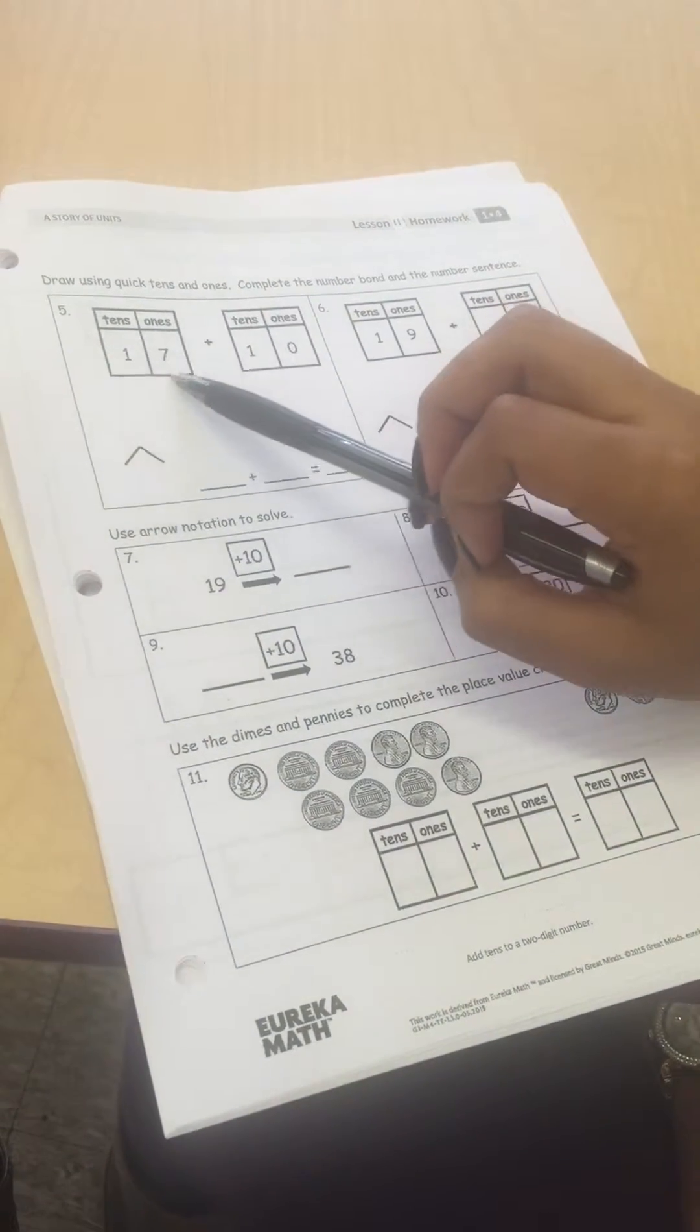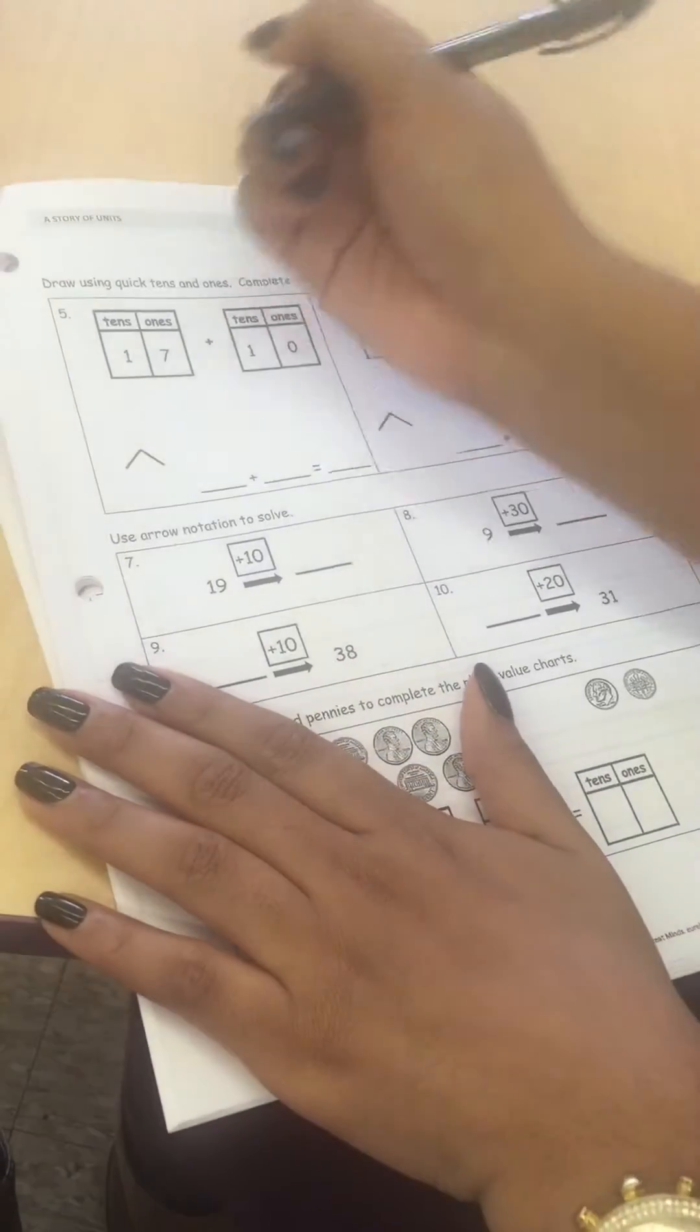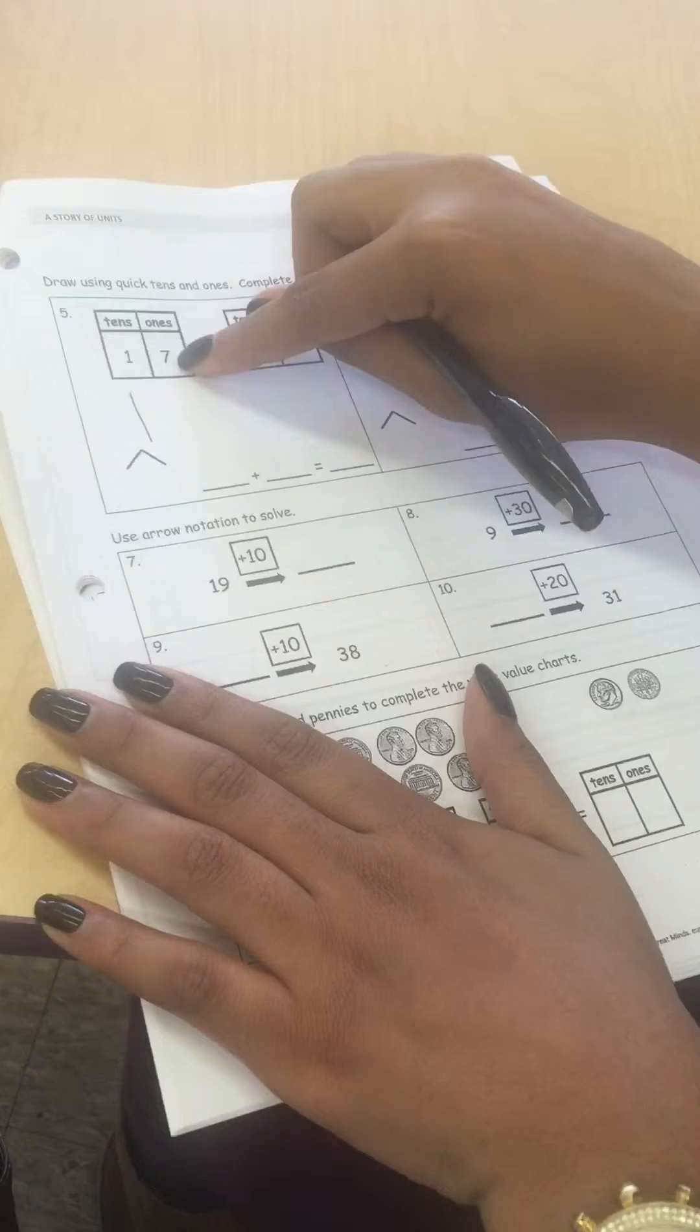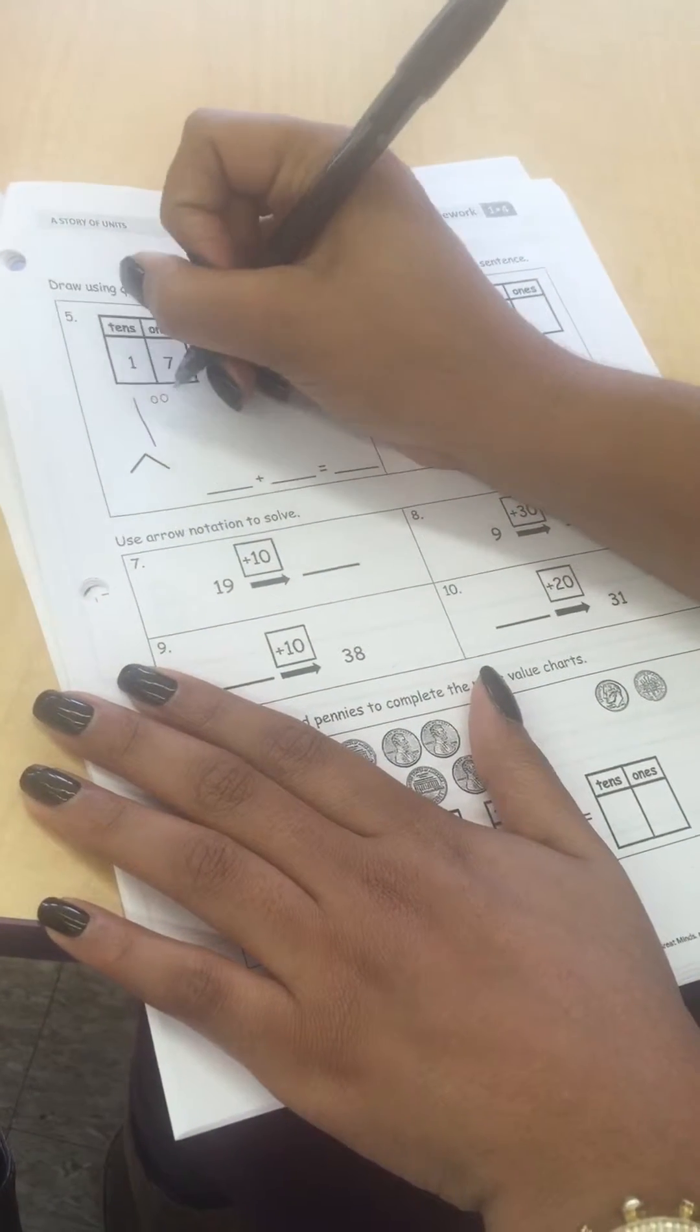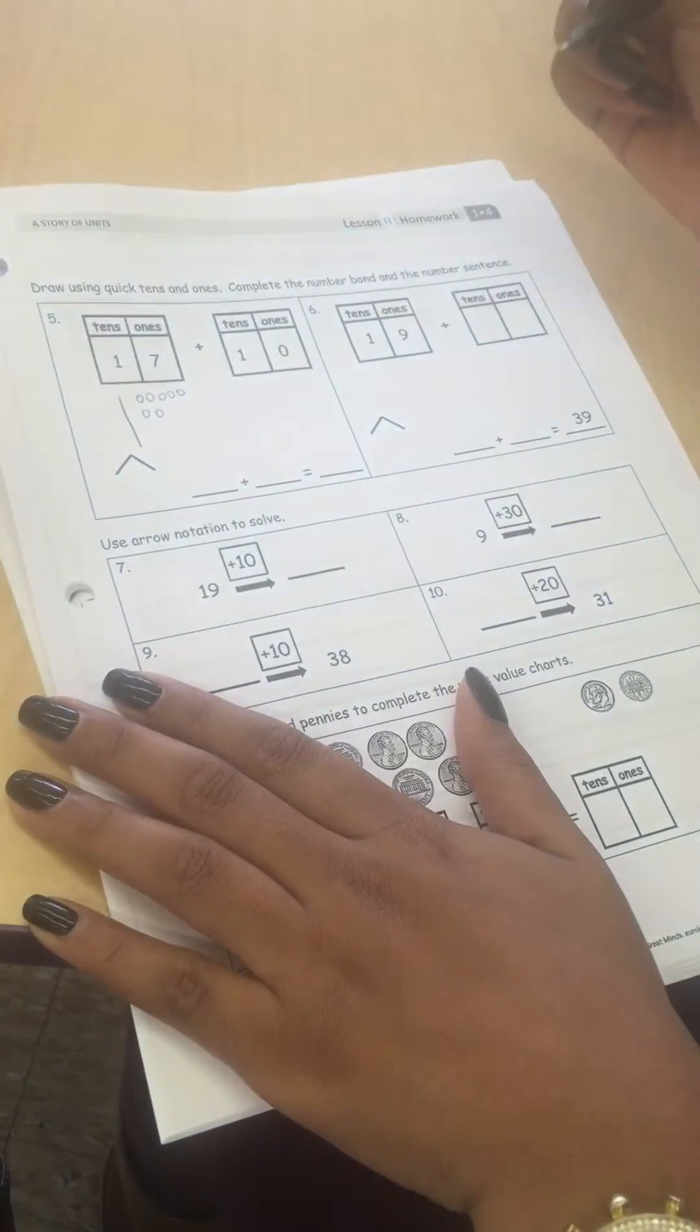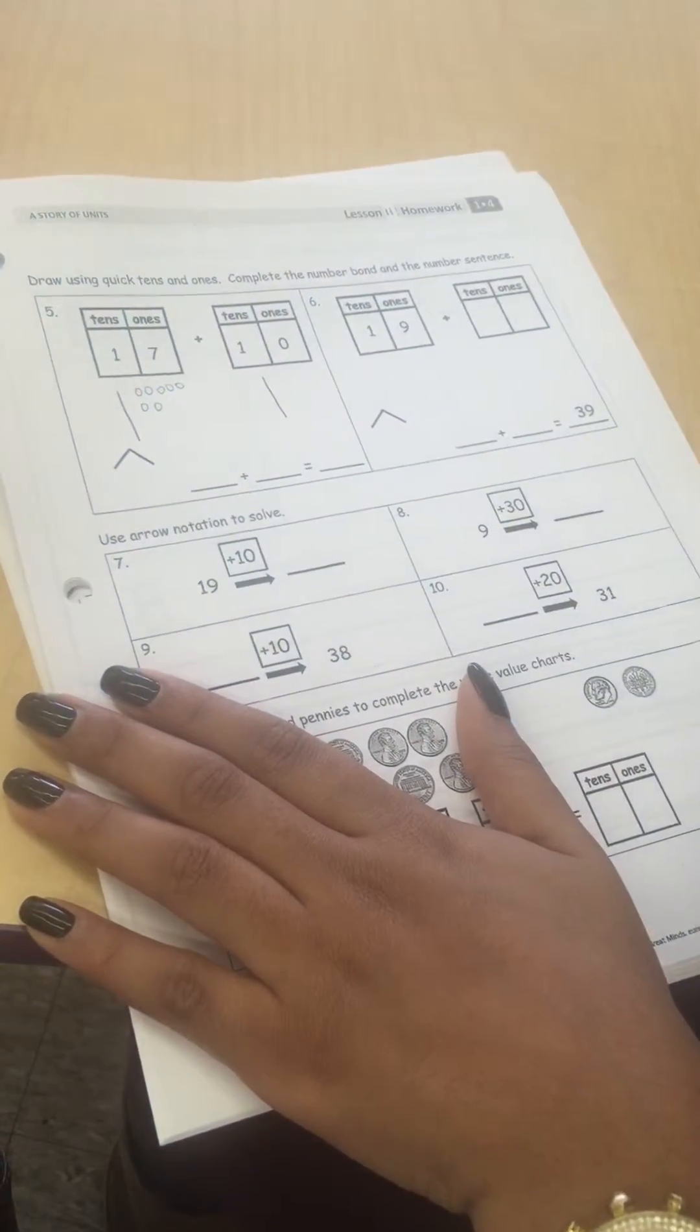Looking at number five, our first number is 17 plus 10. To draw quick tens and ones, you just draw a line for a 10, and then circles for the ones. So 10, 11, 12, 13, 14, 15, 16, 17. And then over here there's just one 10, there's zero ones, I'm not going to draw anything.